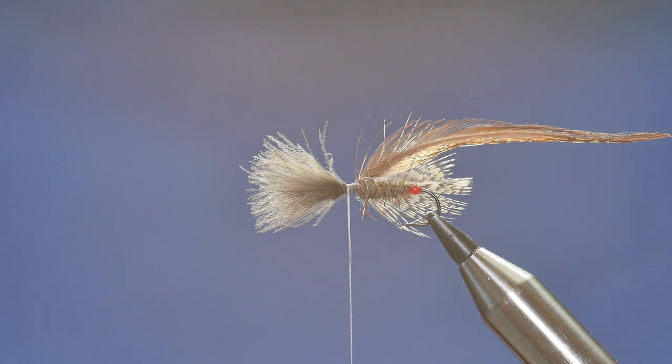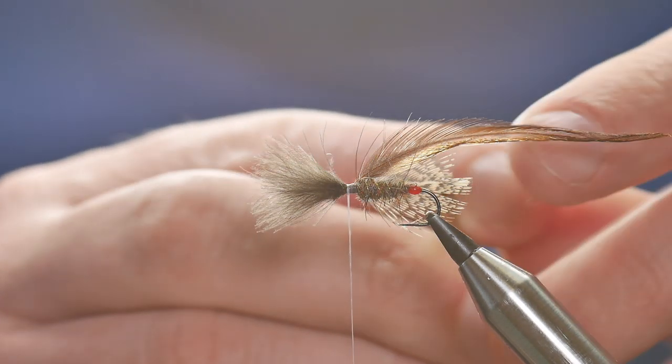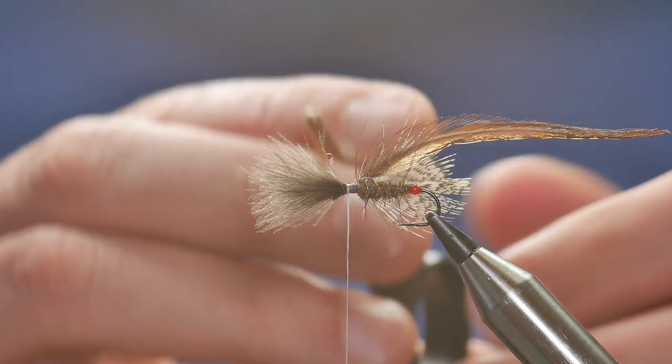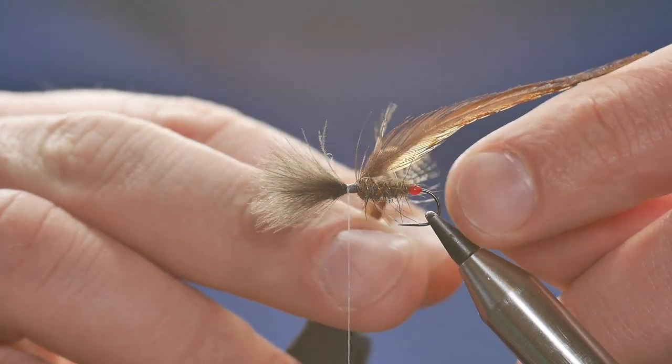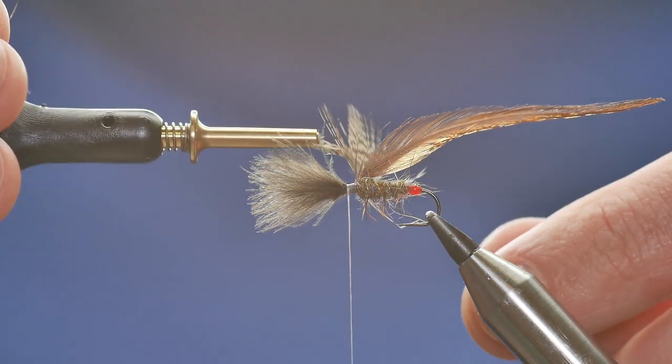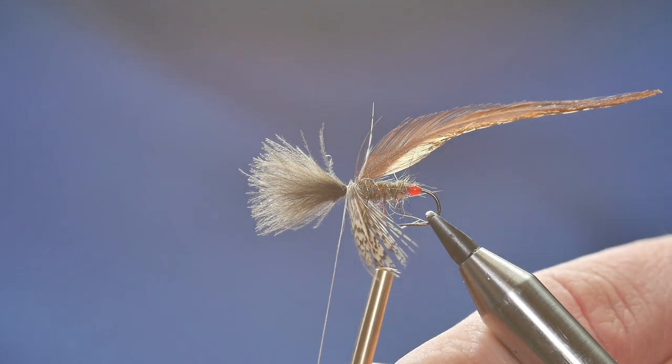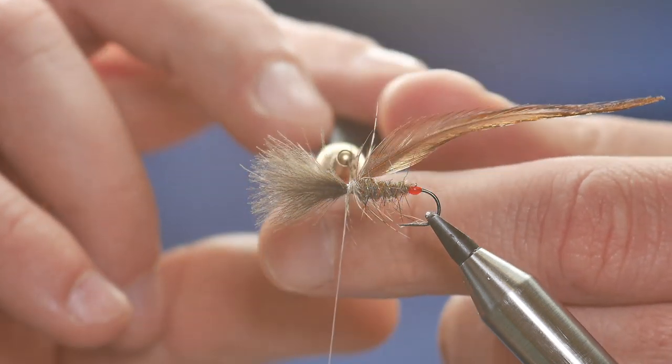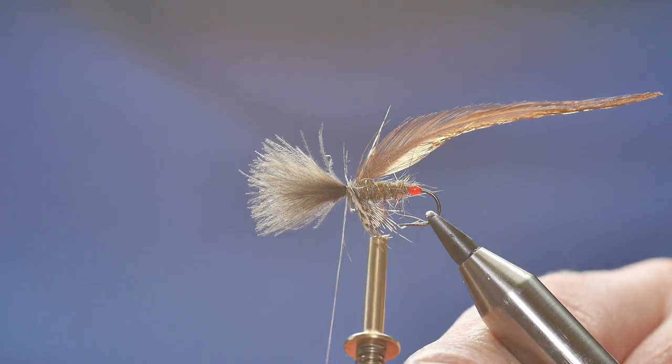So, what I'm going to do first of all, then, is bring my most delicate feather, which is the English Partridge, around first. Now, I would like to have done this in the opposite way, and brought the bigger feather over first. But, I've just found, with the Partridge cape that I'm using, it doesn't suffer any kind of pressure on it. So, once I've got a couple of... see what I mean.